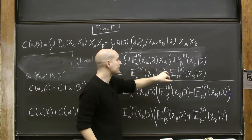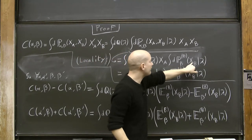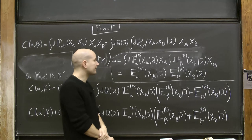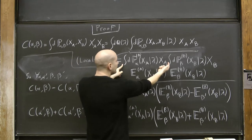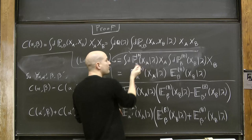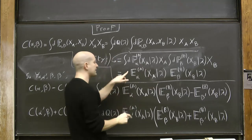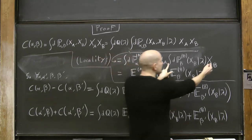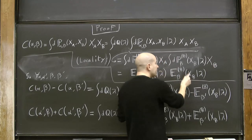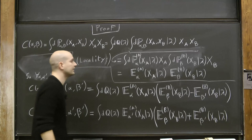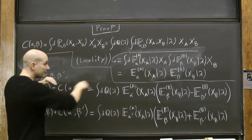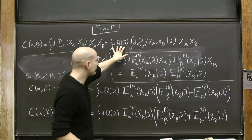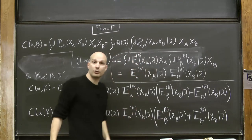Now I apply the locality assumption, which says the conditional probability factorizes exactly. So the term becomes a product: the integral over X_A conditioned on lambda times X_A, times the integral over X_B conditioned on lambda times X_B. The first factor is the conditional expectation of X_A, denoted E^a_α[X_A], and the second is the conditional expectation of X_B, denoted E^b_β[X_B]. The correlation function is thus an integral over lambda of this product of local expectations.